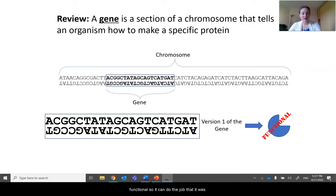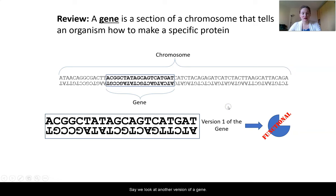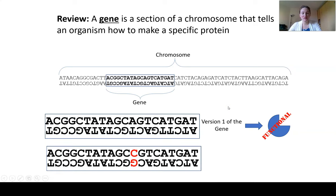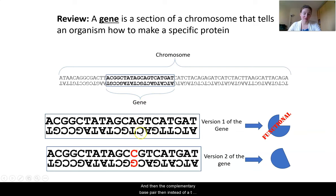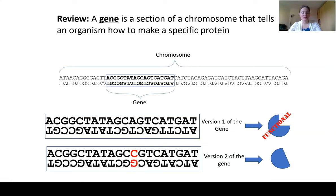If we look at another version of the gene, you'll see that one nucleotide A was changed to a C, and then the complementary base pair changes from a T to a G. That one little change can actually change the entire shape of the protein, making it non-functional.